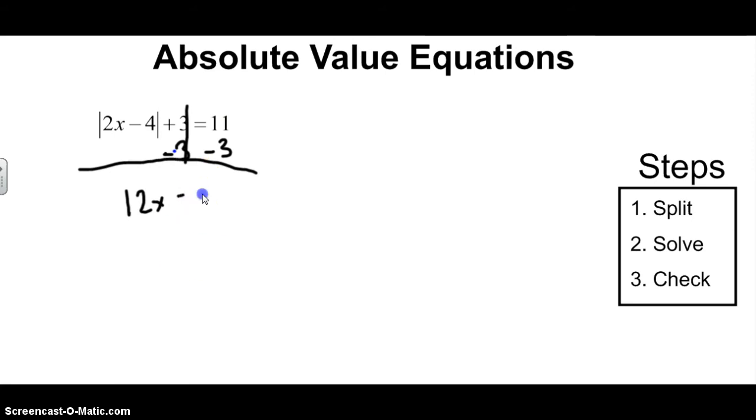So it's 2x minus 4 equals 8, in absolute value. Now that we have it isolated, this is when we start going through our steps. The first thing to do is to split the equation. Remember, it's one positive and one negative. Every time you see absolute value, this is how you solve. So it's 2x minus 4 equals positive 8, and the other equation is going to be 2x minus 4 equals negative 8. So those are our two equations that we're going to solve for.